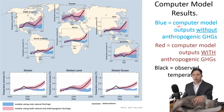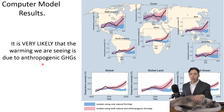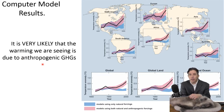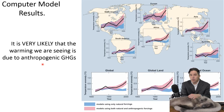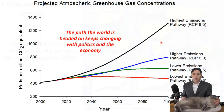Recap: the blue line is computer model outputs without anthropogenic greenhouse gases; red is with anthropogenic greenhouse gases; black is the observed temperature. We can say it's very likely that the warming we're seeing is due to anthropogenic greenhouse gases. Another way to think about it — we've eliminated all other possibilities. We talked about sunspots, volcanoes; the Earth's orbit does change but not nearly fast enough to explain the warming. The only thing we're really left with are the greenhouse gases that we as humans have added to the atmosphere, and the computer math says that looks like the most likely explanation.